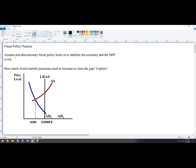We're told that non-discretionary, so that means mandatory, fiscal spending money, maybe an automatic stabilizer or something, and that the MPC is 0.8. How much would transfer payments need to increase to close the gap?